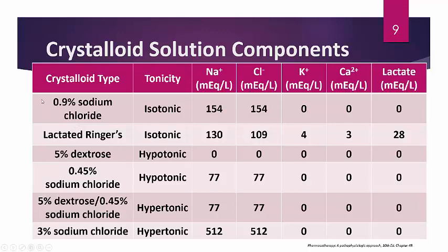Lactated Ringer's is more physiological — it contains 130 mEq/L of sodium, 109 mEq/L of chloride, plus some potassium, calcium, and lactate. This makes it a better fluid for some patients with hyponatremia, particularly those who are hyperchloremic, since 0.9% NaCl has a higher chloride level.